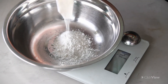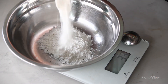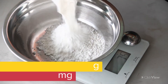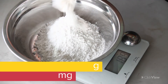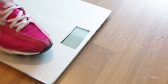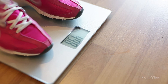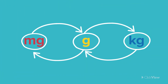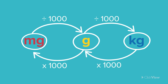Now you can see that we measure small masses with smaller units such as milligrams and grams, and larger masses with larger units such as kilograms. And converting between each unit of mass requires either multiplication or division by one thousand.